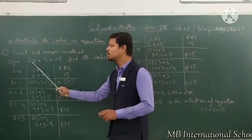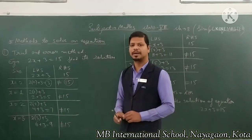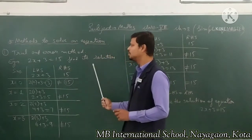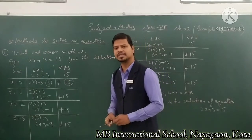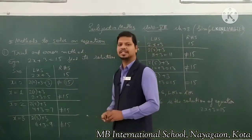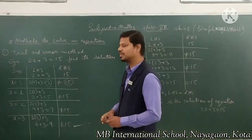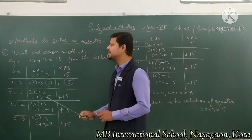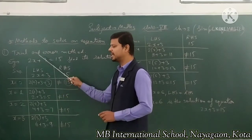For example, 2x + 3 = 15 is the equation given. Now you have to find its solution by trial and error method — that means find the value of x that satisfies both LHS and RHS. First, we divide it into two parts: LHS and RHS.